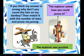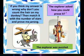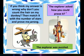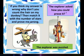The explorer asked, 'How can you prove that you are correct?' Then Akio said, 'If you think my answer is wrong, why don't you count the hairs on my donkey? Then match it with the number of stars and prove me wrong.'